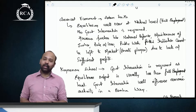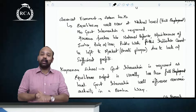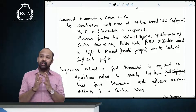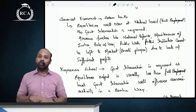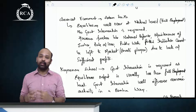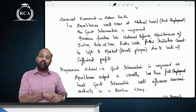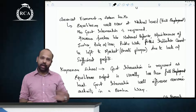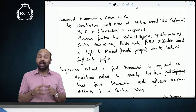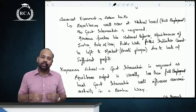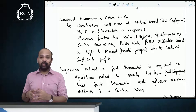Classical economists like Adam Smith believed that the equilibrium level of output in an economy would automatically occur at the natural level of real GDP. However, certain functions like national defense, courts, laws, and regulations require government intervention because there is no profit motive for private players. Keynesian theory adds that government intervention is also required because equilibrium does not necessarily occur at the natural level of real GDP.